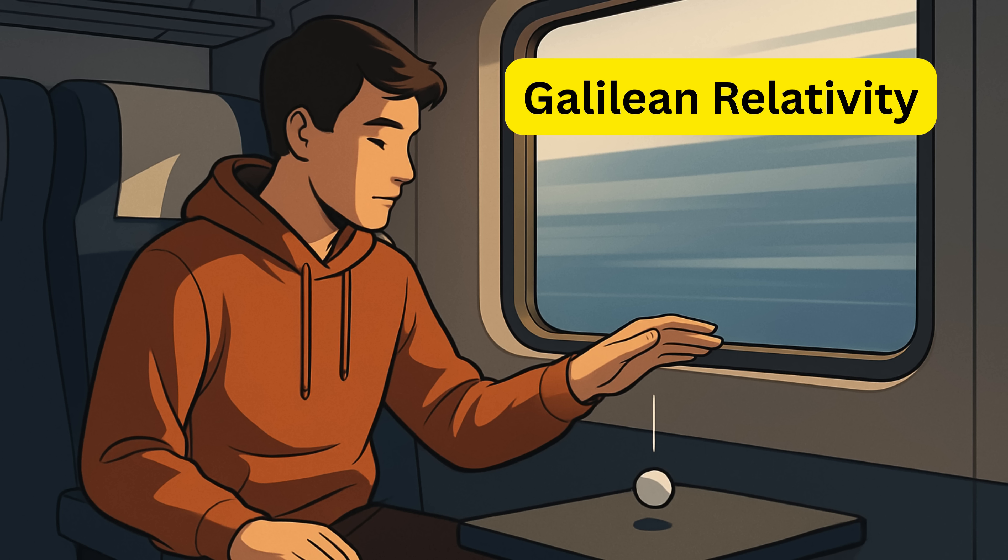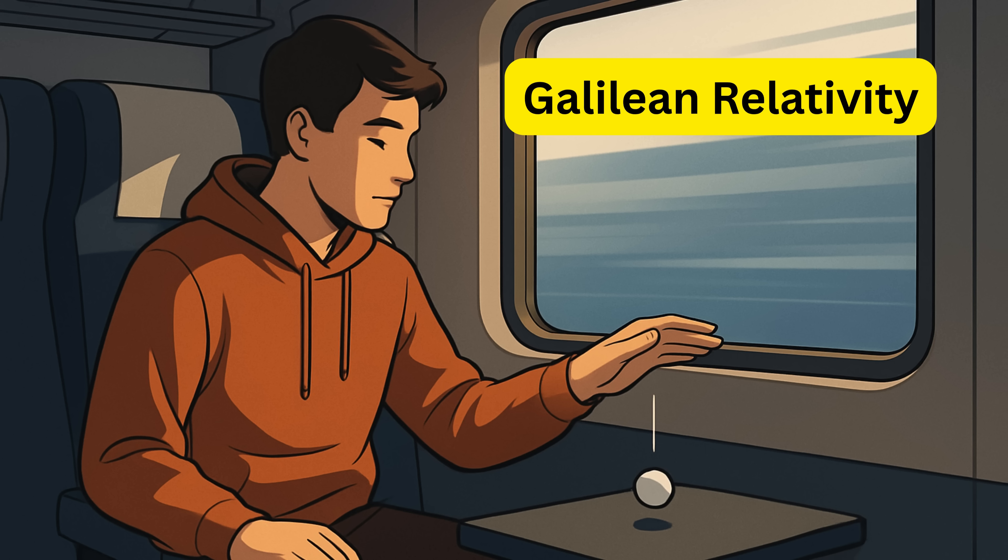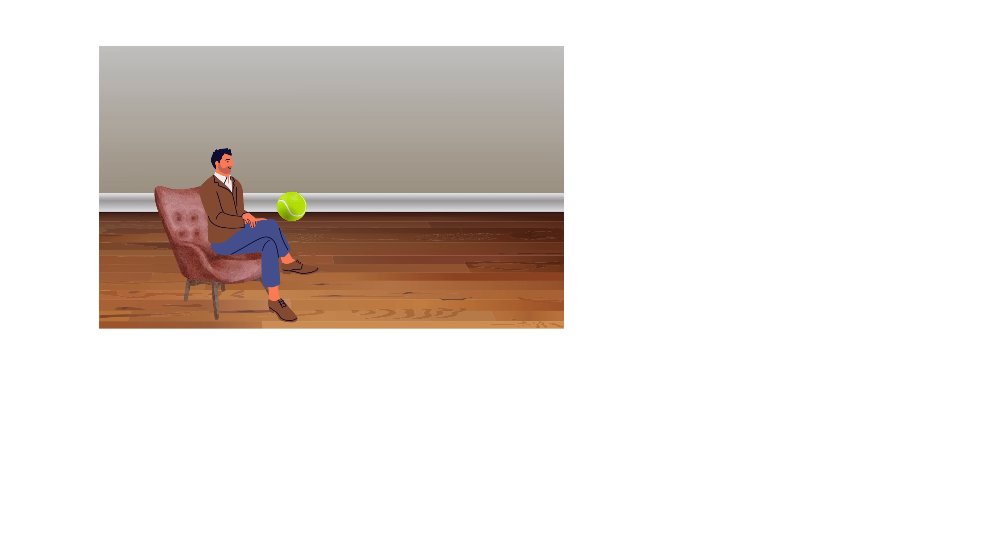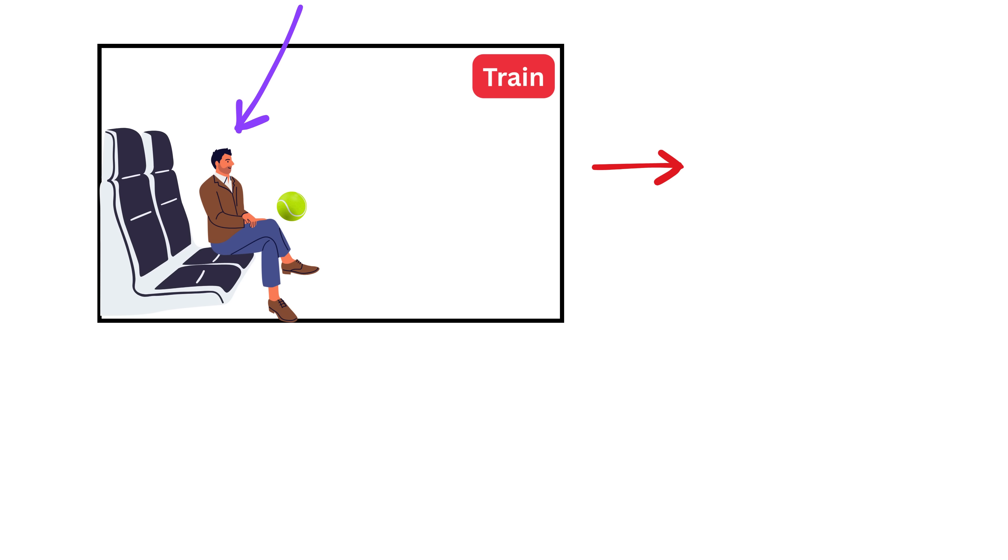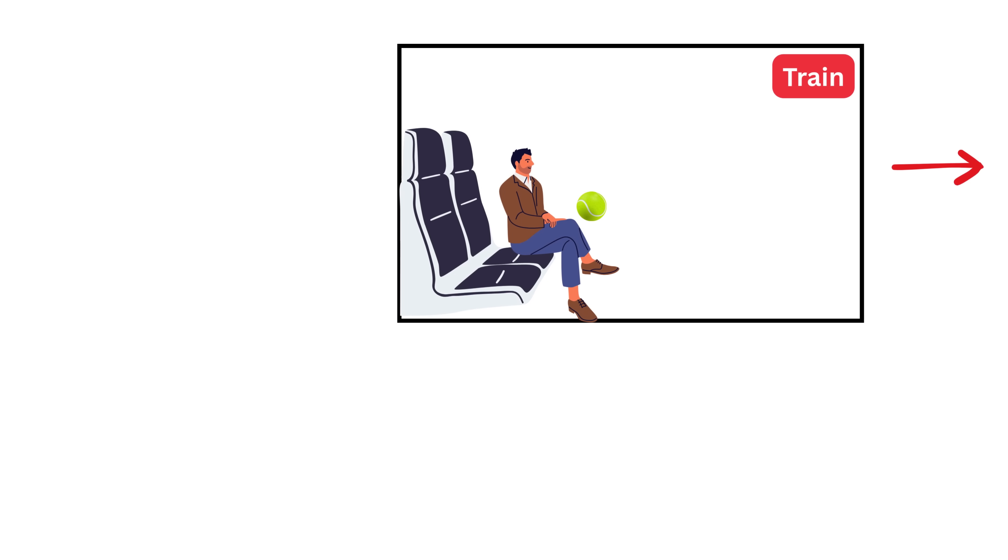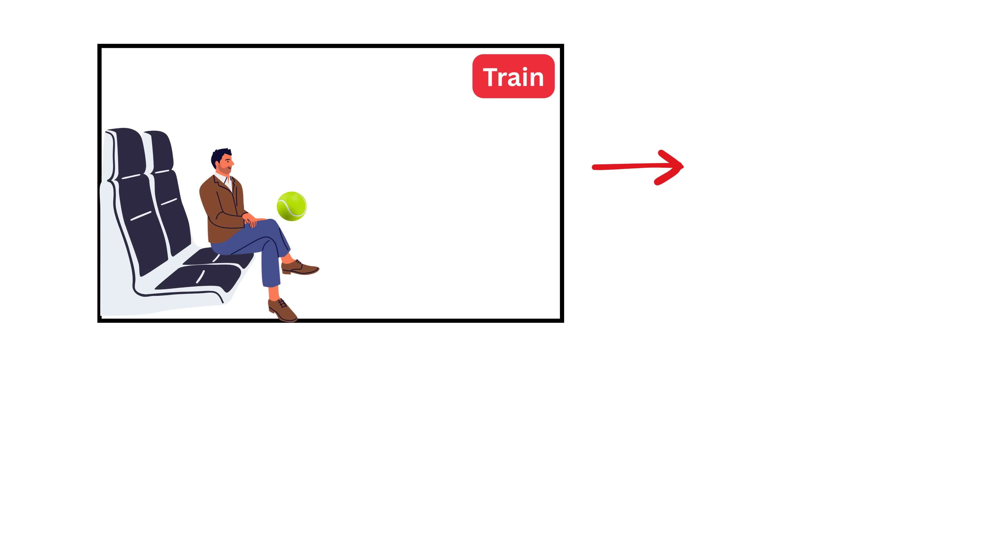One of the key ideas in classical mechanics was something called Galilean relativity. Imagine you are sitting inside a train that's moving at a constant speed. If you throw a ball straight up, it comes right back down into your hand, just like it would if you were sitting still at home. From your point of view, meaning if you are the observer, everything feels normal. The motion of the train does not affect your experiment.